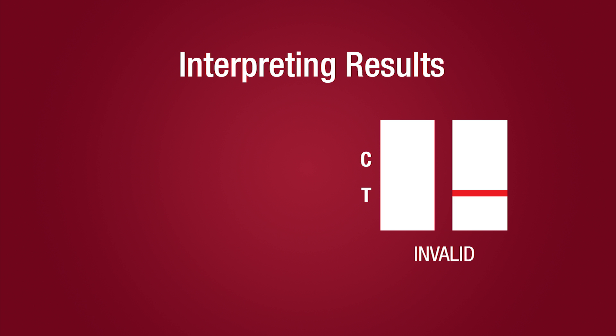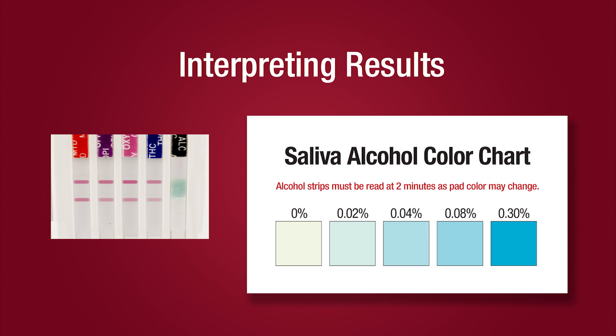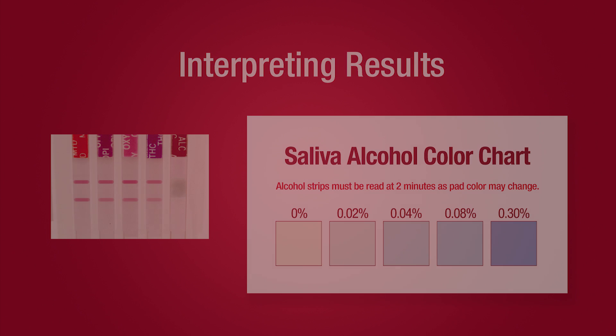If the device includes alcohol, read the alcohol strip at 2 minutes. Compare the color of the reaction pad with the color chart provided to determine the relative blood alcohol level. No color change indicates a negative result.